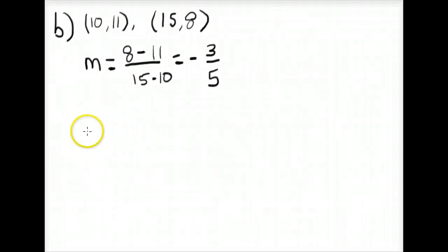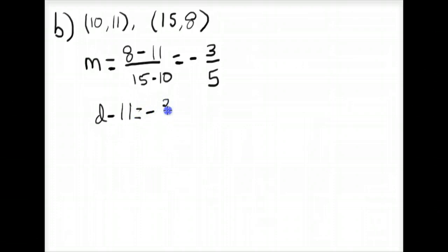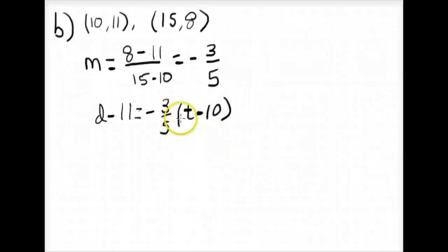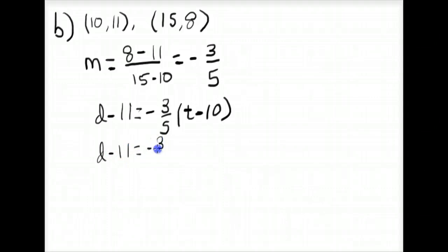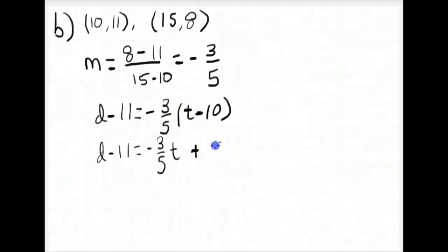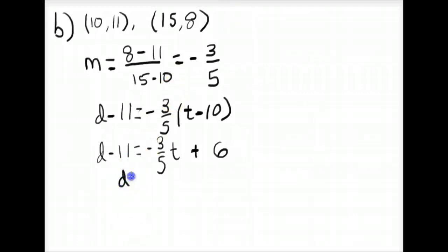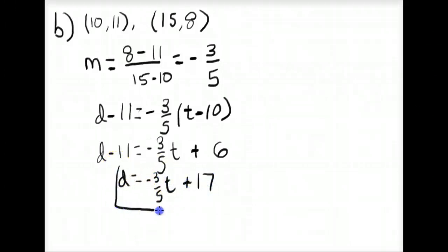We're writing an equation for distance in terms of time, so we have D minus 11 equals negative 3 fifths times (T minus 10). Distributing the negative 3 fifths gives D minus 11 equals negative 3 fifths T plus 6. Solving for D, we get D equals negative 3 fifths T plus 17. This is the equation relating distance in terms of time.